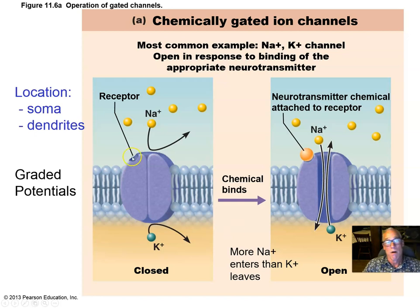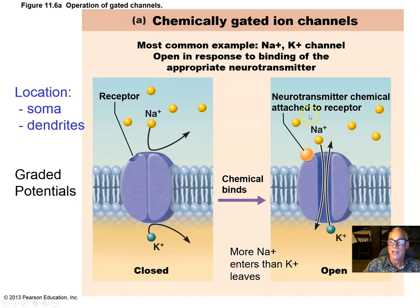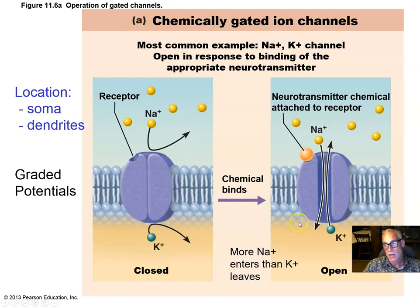Here's a schematic of a ligand-gated or chemically gated channel that's closed when no ligand is present. Once the neurotransmitter diffuses across the synaptic cleft and binds to this receptor, it opens — in this case, a sodium-potassium channel. When a nonspecific sodium-potassium channel is open, more sodiums will leak in than potassiums leak out because they're attracted to the negative charge inside the cell, so we depolarize the membrane.